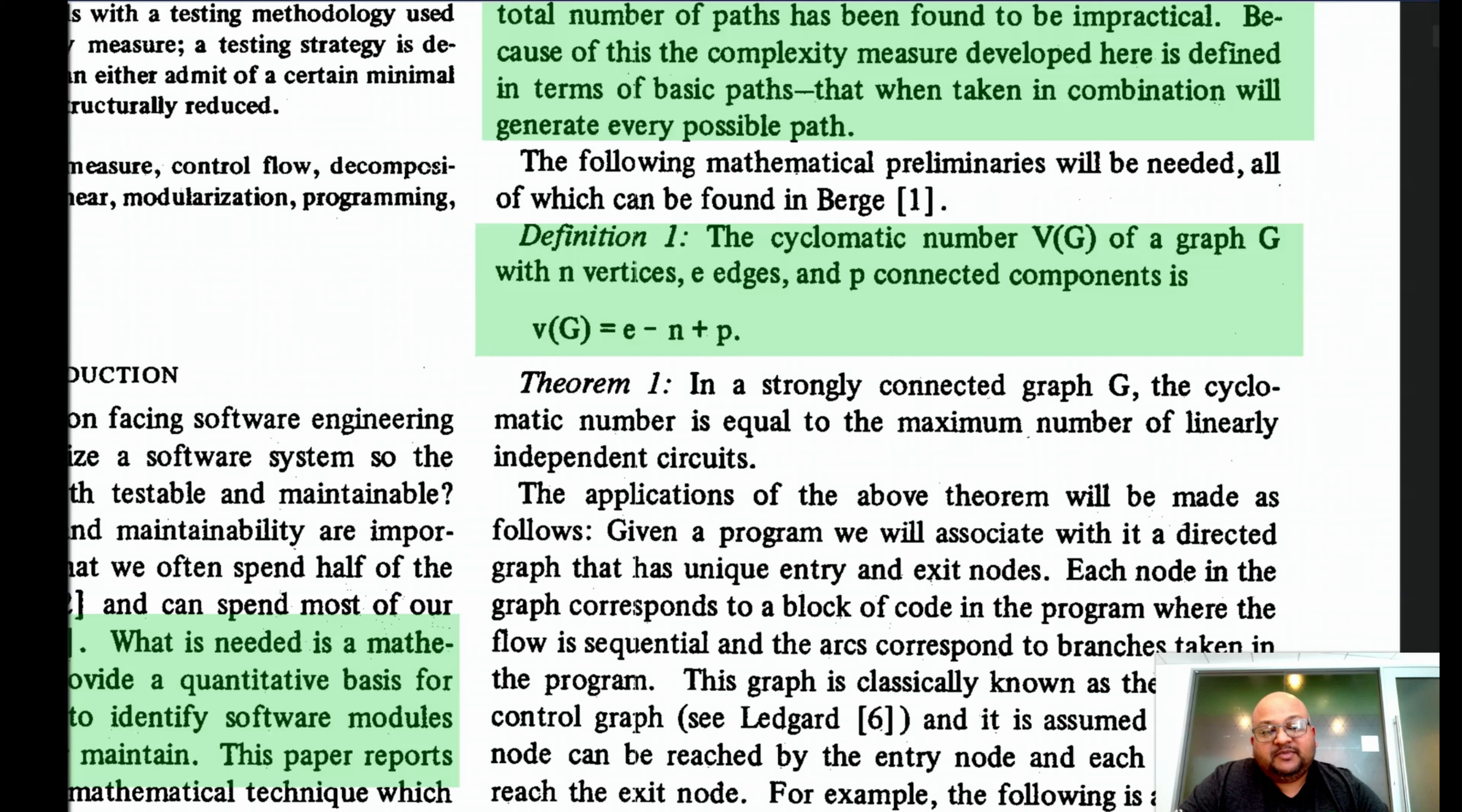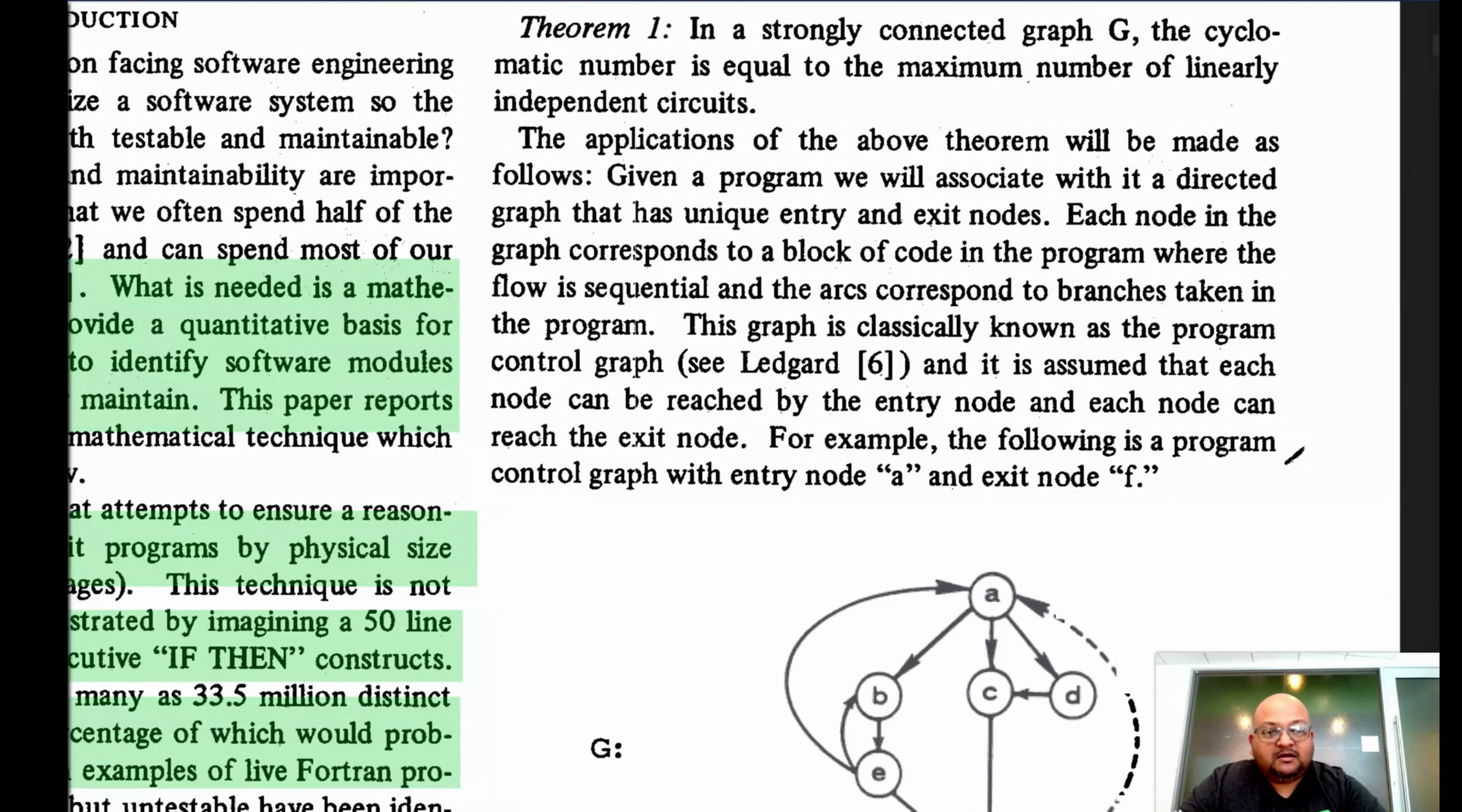And why are we computing this for a graph? We're doing this because we are going to model a program as a control flow graph. A control flow graph is a graph representation of a program where each node in the graph corresponds to a continuous block of code in the program where flow only enters at the top and only exits at the bottom. The edges correspond to branches taken in the program.